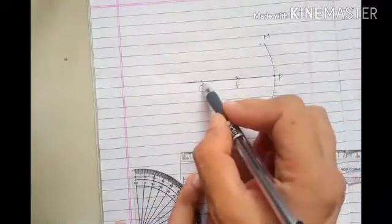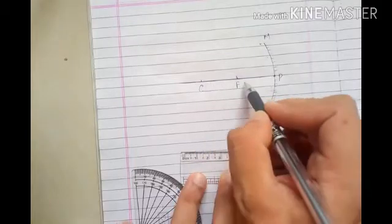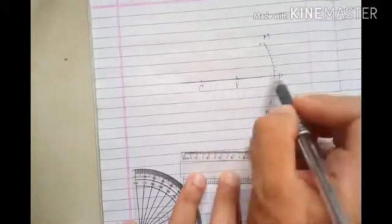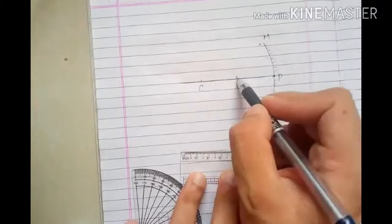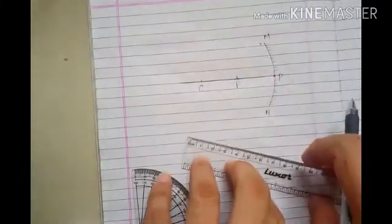The most important thing here is that PF distance and FC distance should be the same. F is the midpoint of CP. You could have taken 2 centimeter and 2 centimeter, not a problem, but I have taken 3 and 3.